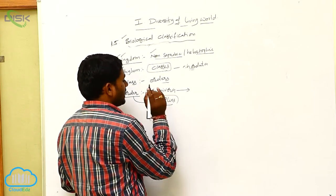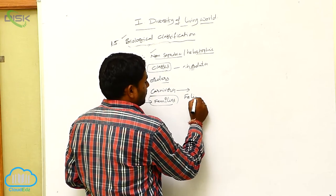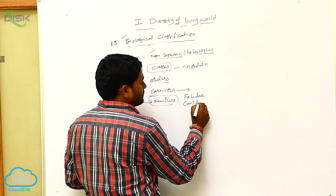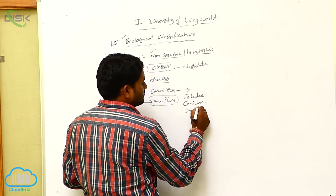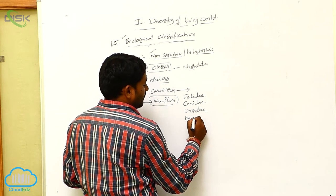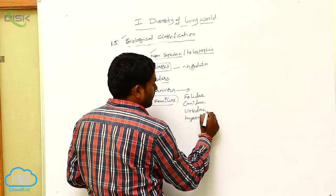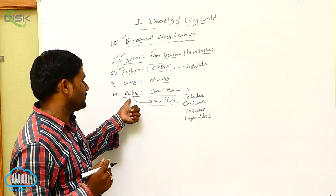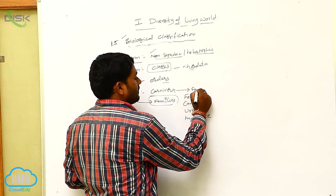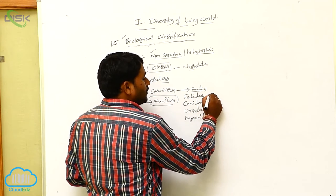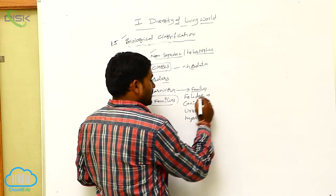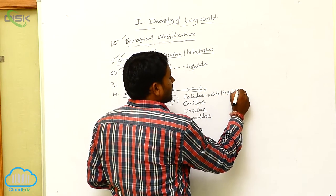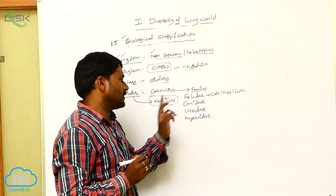In the Carnivora order, generally, the families are Felidae, Canidae, Ursidae, and Hyaenidae. So Carnivora has these families. If you take Felidae, generally cats, tiger, lion — such types of animals are joined in the Felidae family.